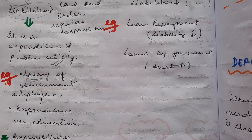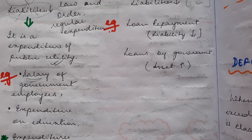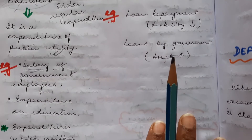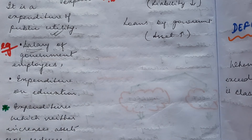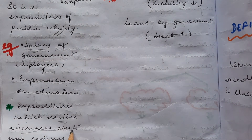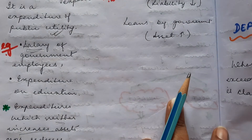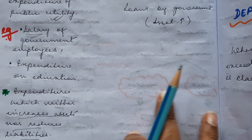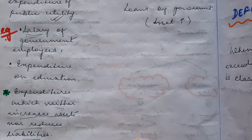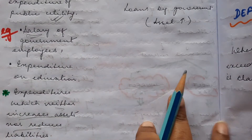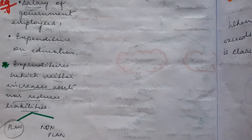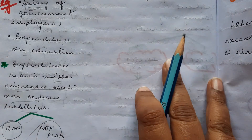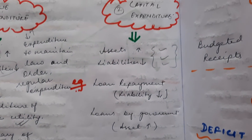So what we find is that revenue expenditures are the ones which neither increase assets nor reduce liabilities. Those are called revenue expenditures. Revenue expenditures are of two types: planned expenditures and non-planned expenditures.